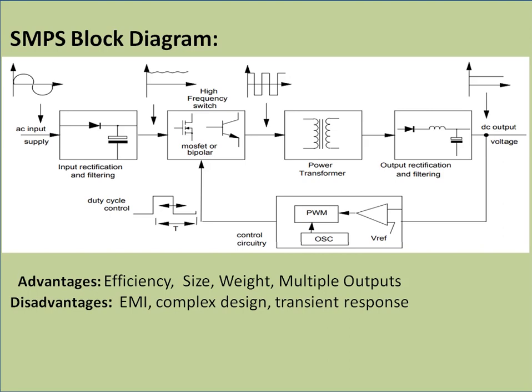The AC signal is rectified and filtered, then fed to a high-frequency switching element where the DC is converted to a high-frequency AC. This is fed to a power transformer, whose output is again rectified and filtered. For better load and line regulation, the output is continuously monitored by the control circuitry.